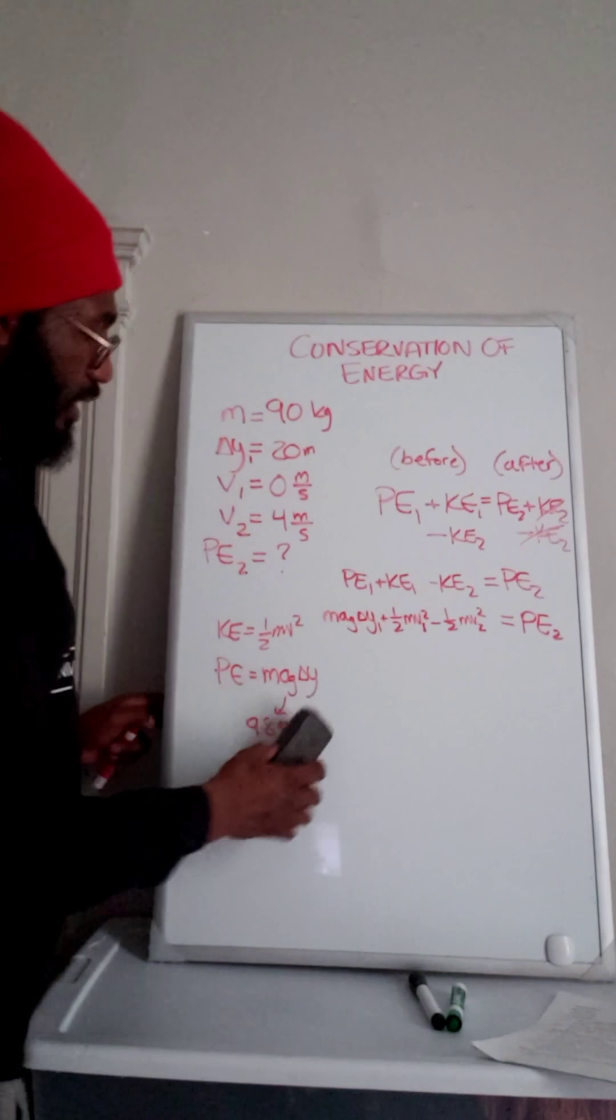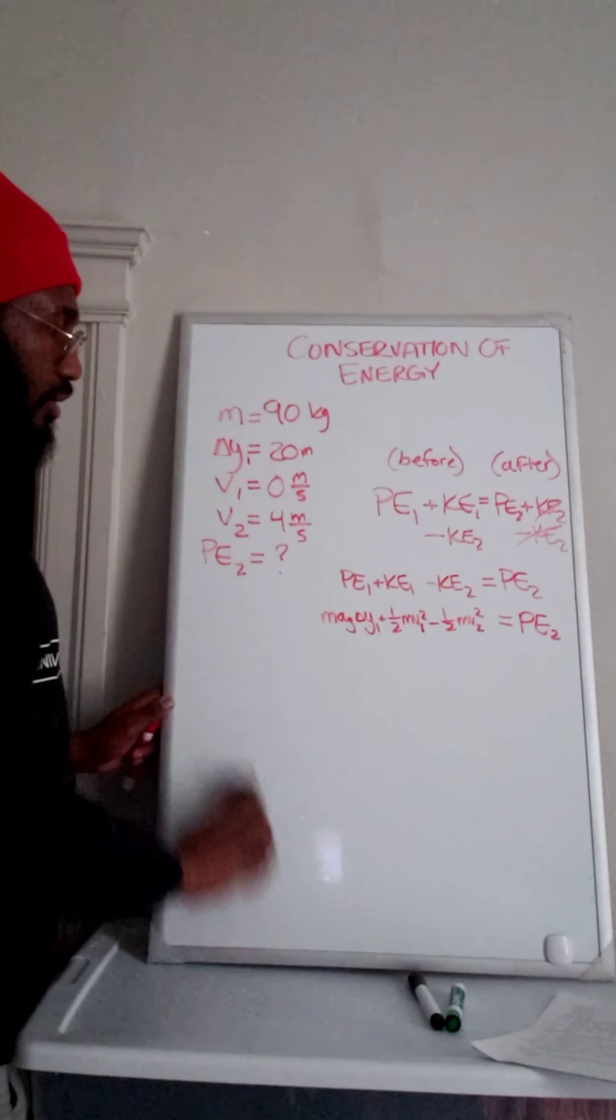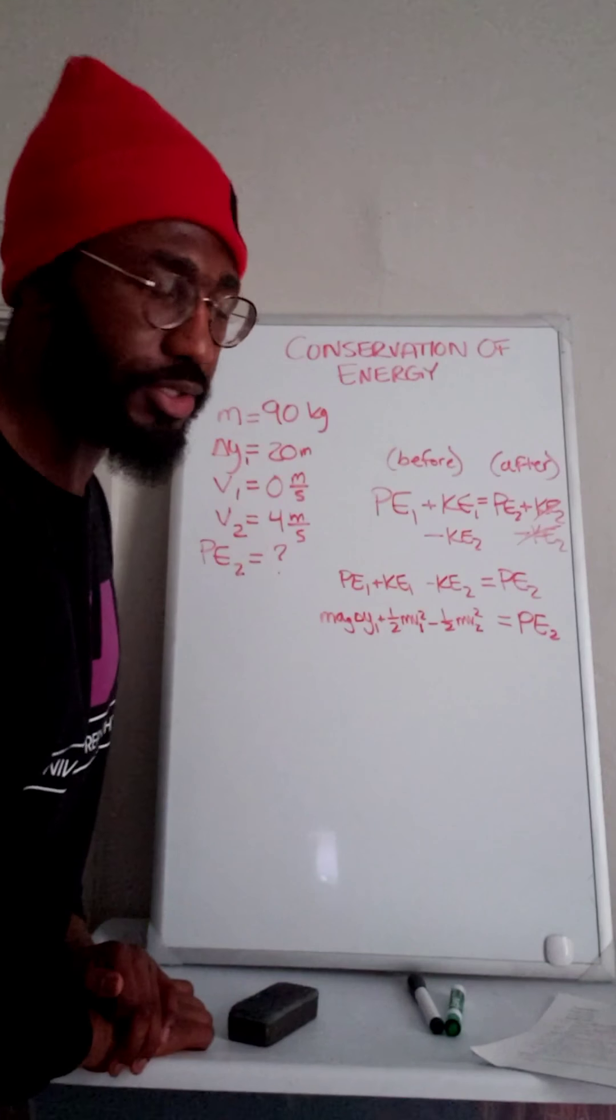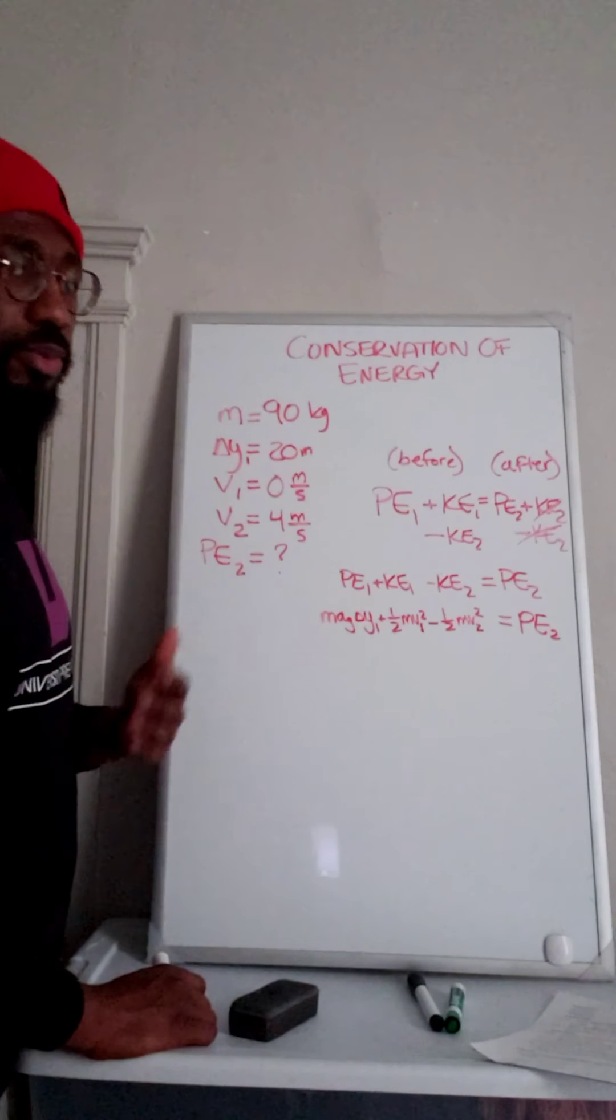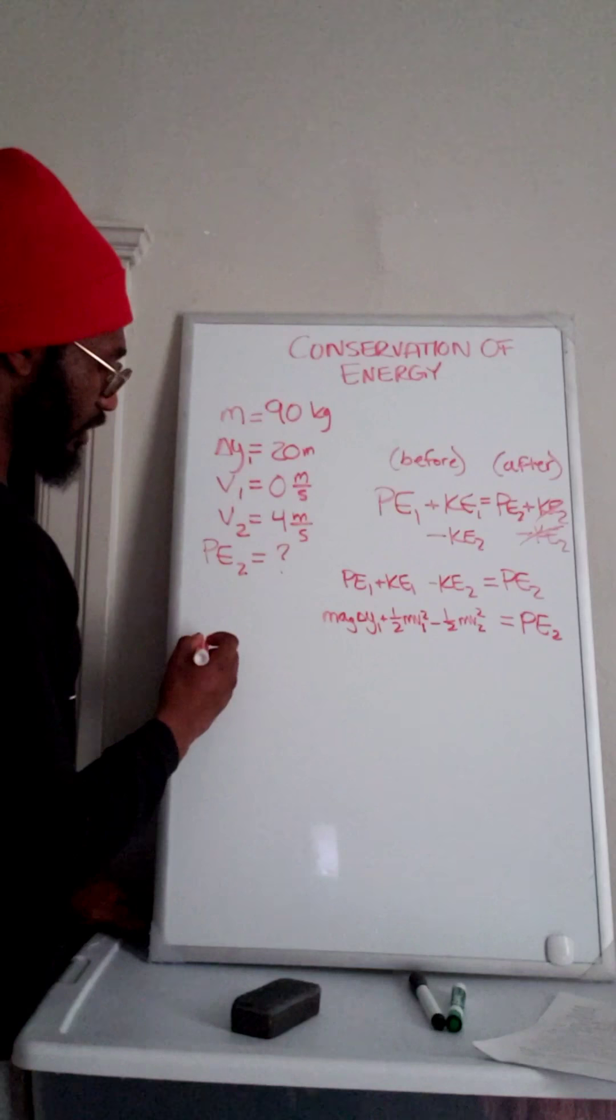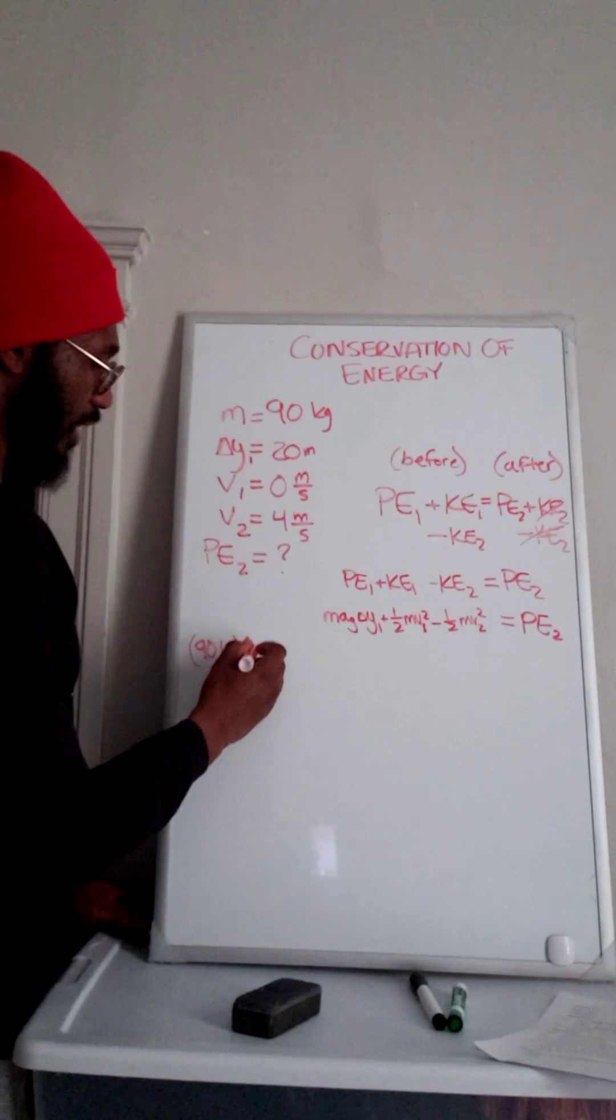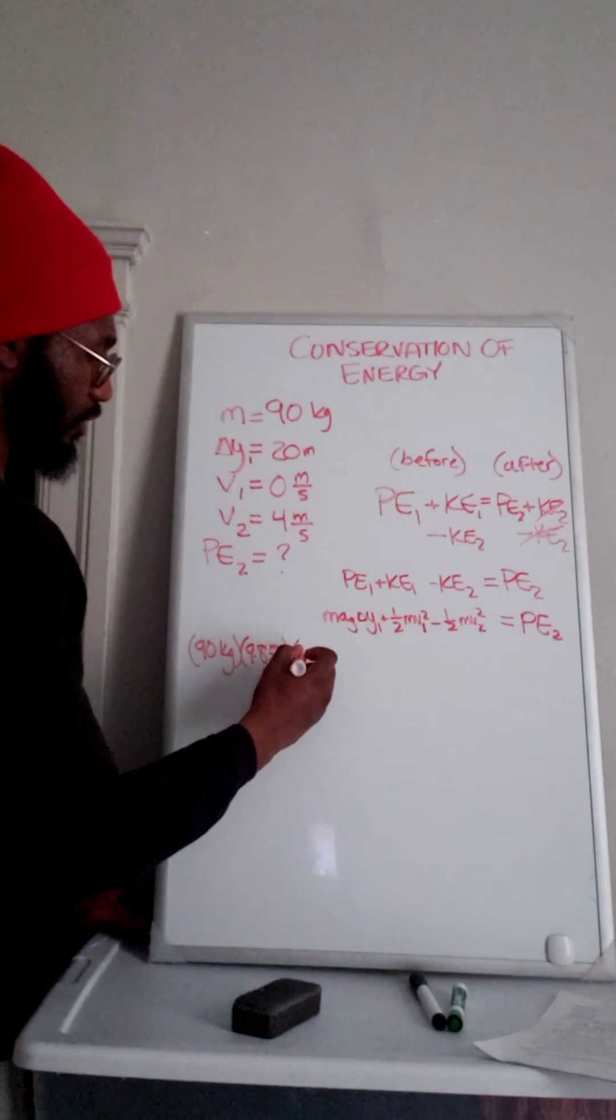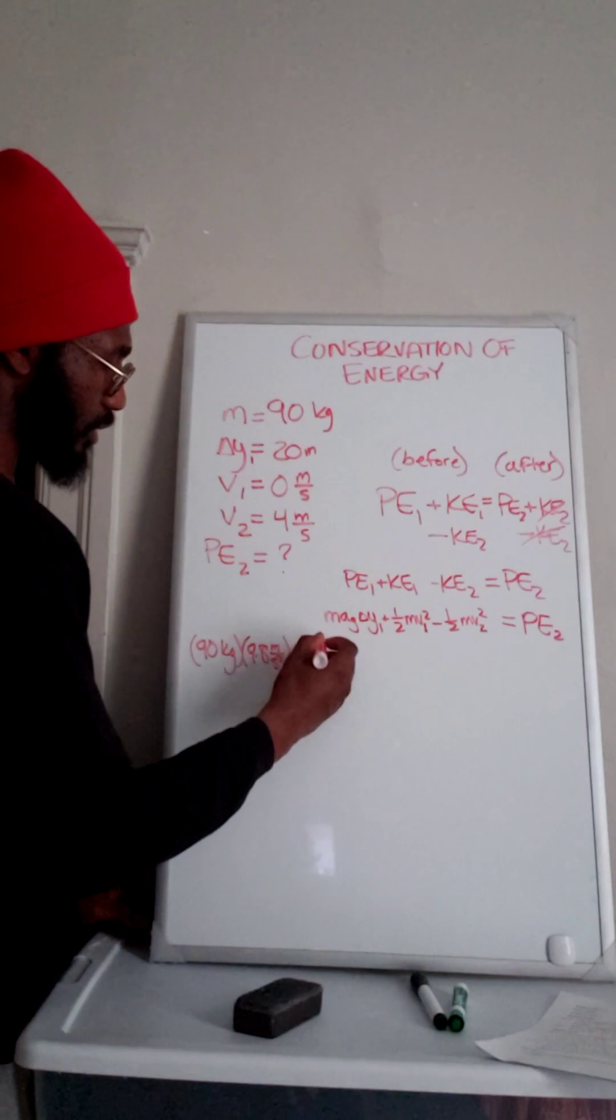I'm going to erase these equations on this side so we can have more space to work with. And now we're going to just plug and check. We've got our variables. We have our equations set up. We're just going to plug in our numbers and solve. So the mass is 90 kilograms. Acceleration due to gravity is 9.8 meters per second squared. And delta Y1 is 20 meters.